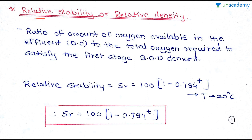So, relative stability is the ratio of the amount of oxygen available in the effluent to the total oxygen required to satisfy the first stage BOD demand. This ratio is generally expressed as YT divided by L0, where YT is the BOD met in a given time and L0 is the ultimate BOD. So YT divided by L0, multiplied by 100, gives us relative stability.